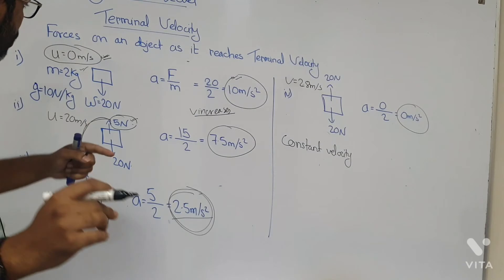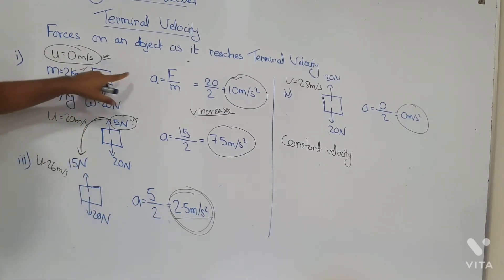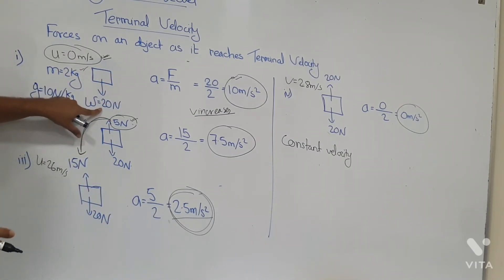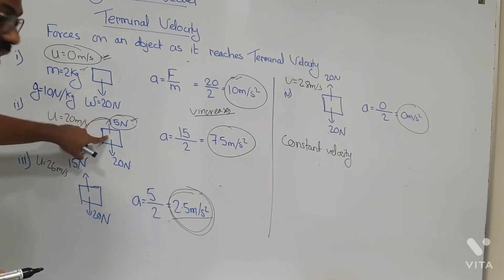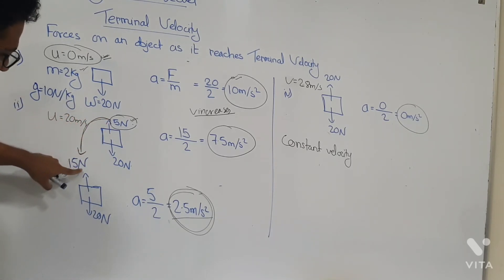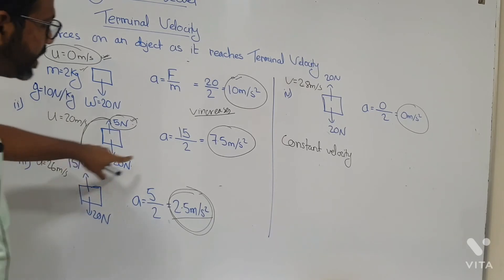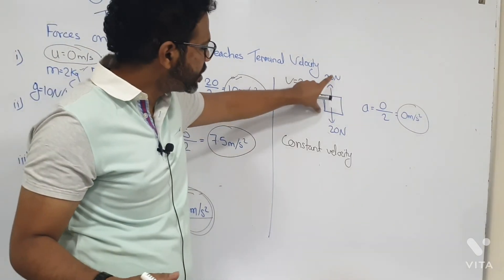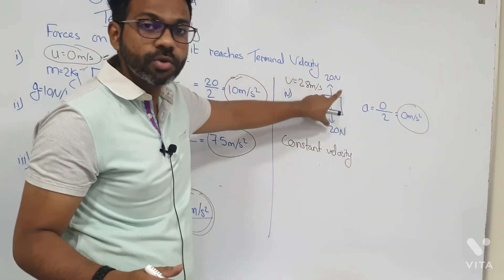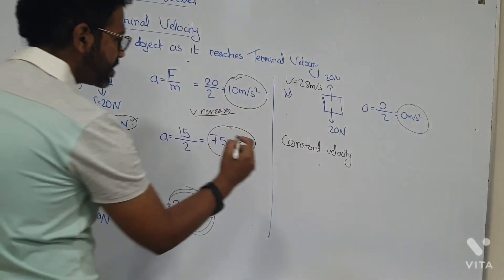This constant velocity is called the terminal velocity of the object. During the process of reaching terminal velocity, what happened to the forces acting on it? Initially the only force was its weight, then air resistance started acting on it and kept on increasing until it reached a value equal to the weight of the object.